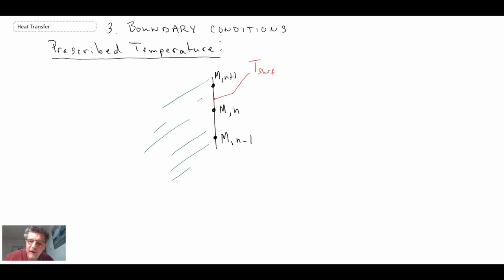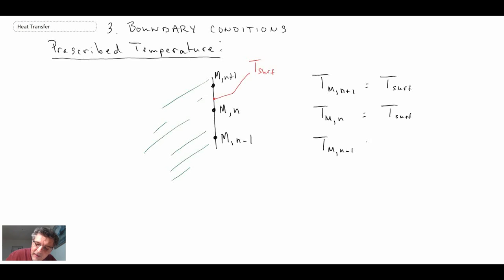Writing out the finite difference form of this is actually quite easy. The temperature at node location M, N+1 is just equal to the surface temperature. T sub M, n is again equal to the surface temperature, and T sub M, N−1 is also equal to the surface temperature. You could even have a surface temperature that is changing — all you do is change the temperature at each of those node locations. That's the simplest boundary condition.